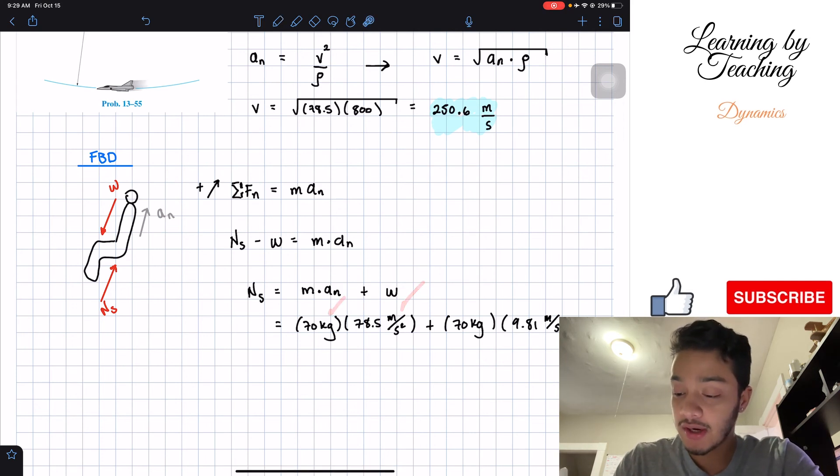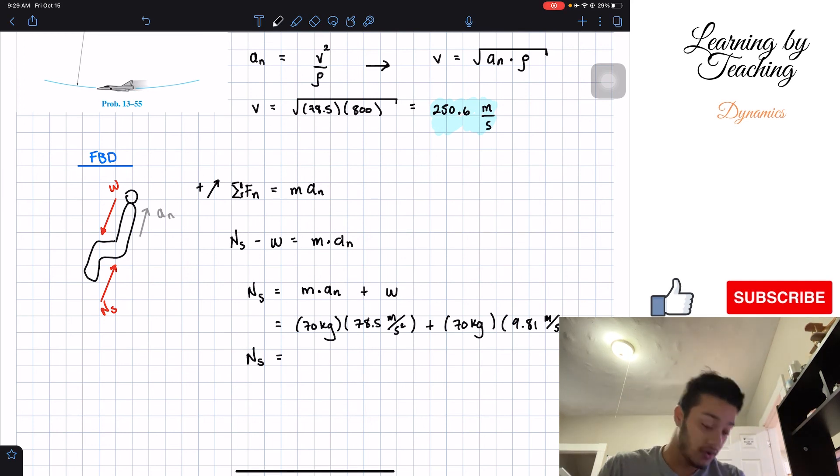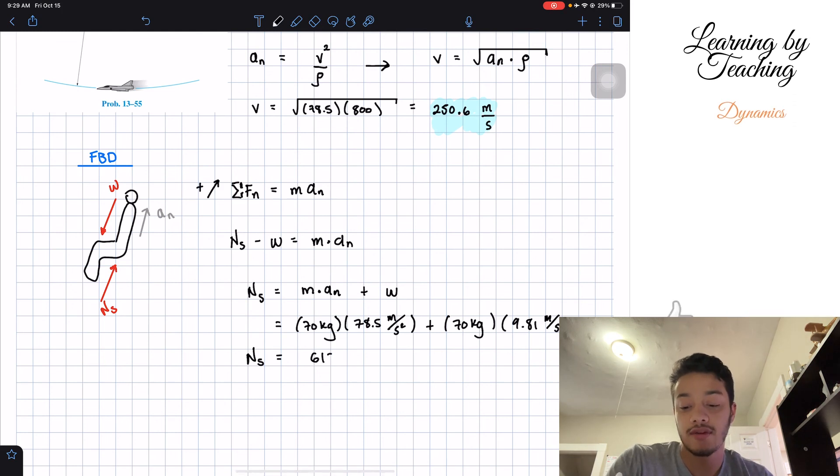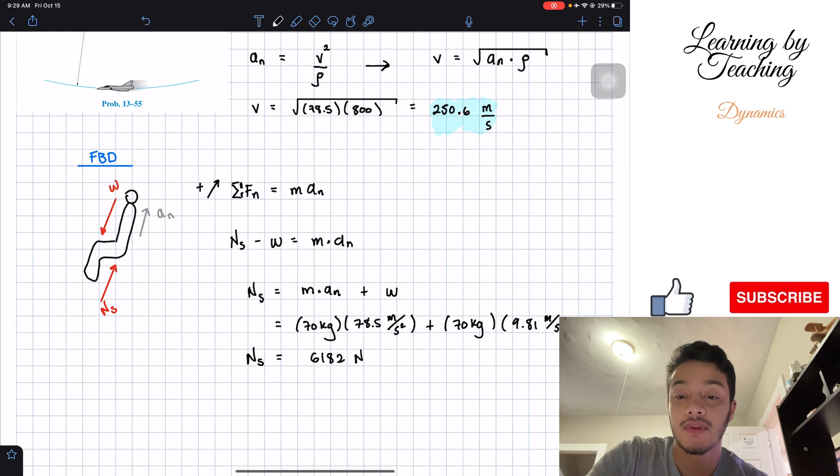As we can see, we got kilograms, meters per second squared. Again, kilograms, meters per second squared. We have newtons, so both units match. So, we have that our normal force, if we plug this into our calculator, will be equal to 6,182 newtons. And we just found out the second answer for this problem.